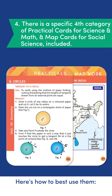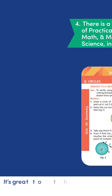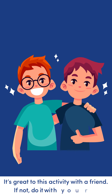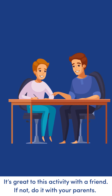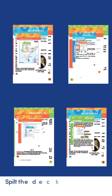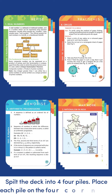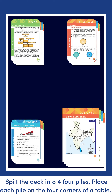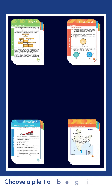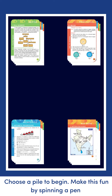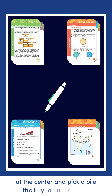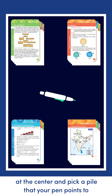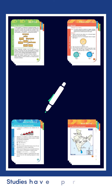Here's how to best use them. It's great to do this activity with a friend — if not, do it with your parents. Split the deck into four piles and place each pile on the four corners of a table. Choose a pile to begin. Make it fun by spinning a pen at the center and picking the pile that your pen points to.